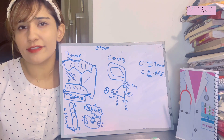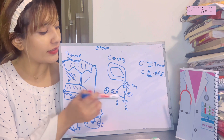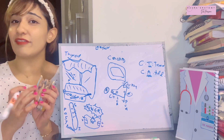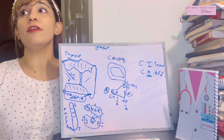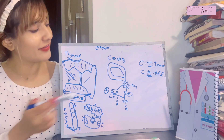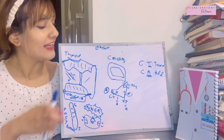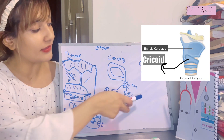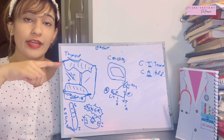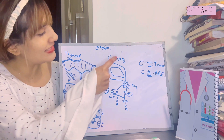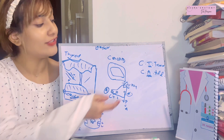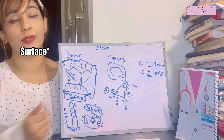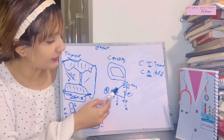Now let's move on to the cricoid cartilage — the best friend of the thyroid cartilage. Because the thyroid cartilage has no posterior border, the cricoid cartilage has its back. The cricoid cartilage is shaped like a ring, and just like a ring shows commitment, the cricoid is committed to the thyroid. Anteriorly it forms an arch, and posteriorly it has large laminas.